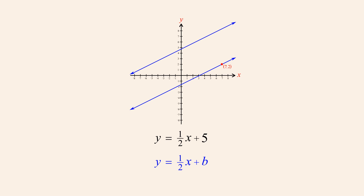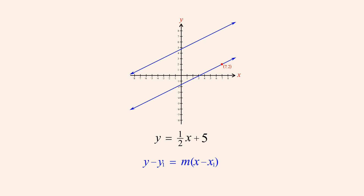However, we cannot write the equation using slope-intercept form since we don't know the second line's y-intercept. However, we can use point-slope form, since we know the line's slope and the coordinates x1 and y1 of the given point which lies on the line.